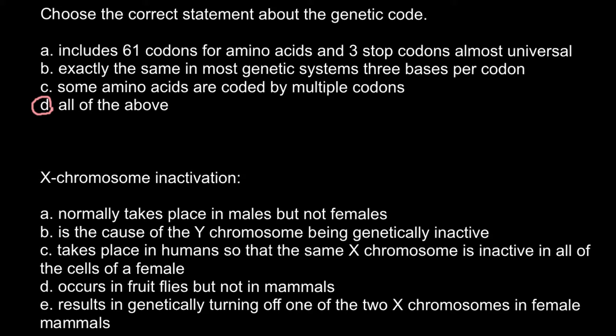Now I can move to the second question about X chromosome inactivation. Answer A states it normally takes place in males but not in females. This is not correct, because in males we would have only one X chromosome and one Y chromosome. Y chromosome is much smaller than X chromosome, and because the X chromosome is so large and has so many genes on it, switching it off would disrupt the whole function of the organism.